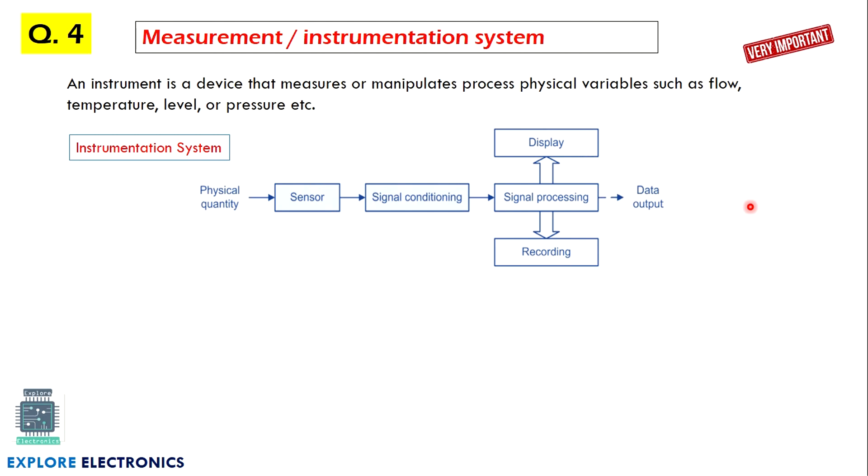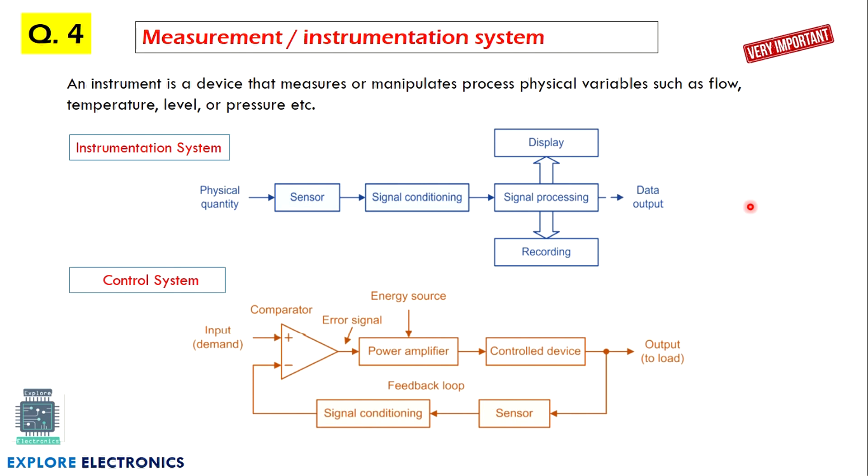And then measurement system means measurement system will be taking an input from the sensor and it is going to process, and then it will be connected to display and recording system may be asked, or the control system also can be asked with respect to the instrumentation system is concerned. This is also a very important thing. Why? Because this is only the block diagram we have.